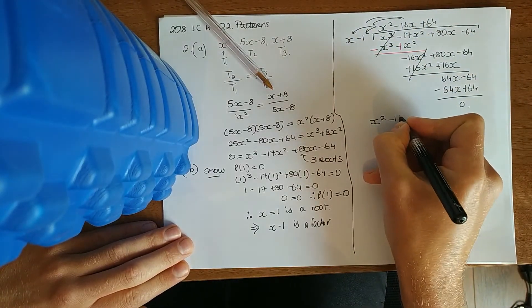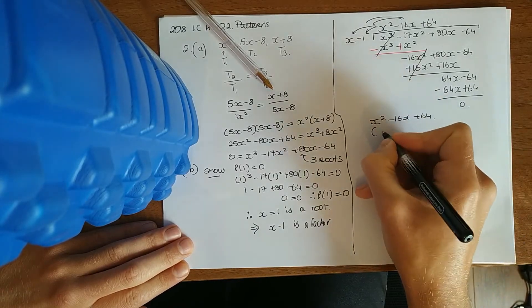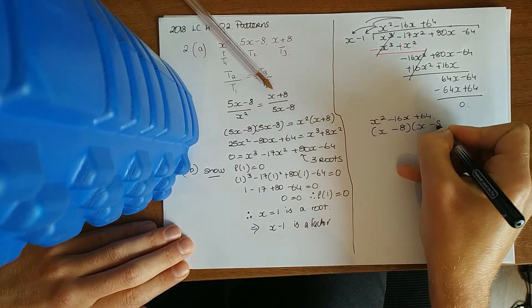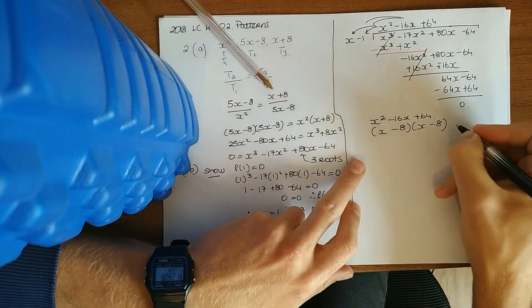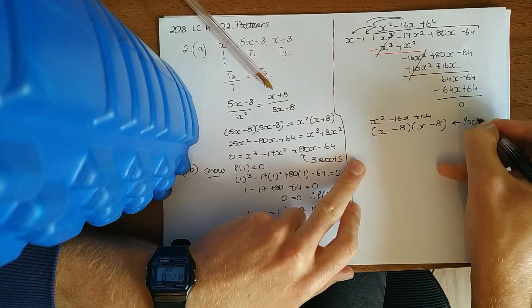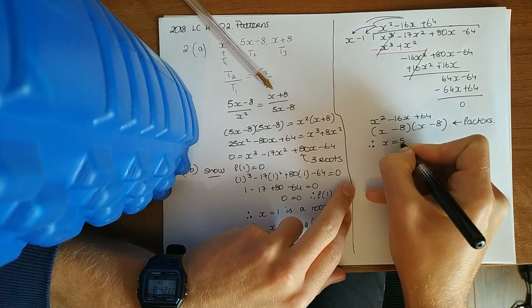Factorize this. Actually going to turn out to be a perfect square. What have they asked? Find the other value of x for which f of x equals 0. So they're my factors, the other two factors. Therefore, another root is x equals 8.